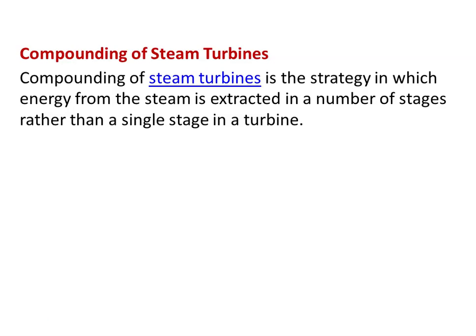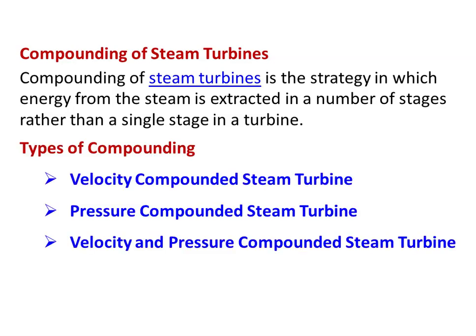There are three different types of compounding: first, the velocity compounded steam turbine; second, the pressure compounded steam turbine; and third, the velocity and pressure compounded steam turbine, which is a combination of both effects.